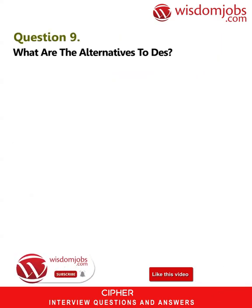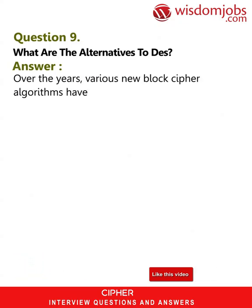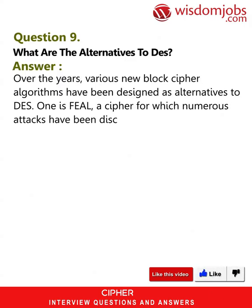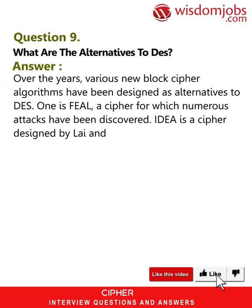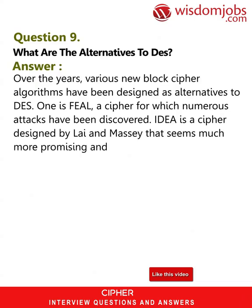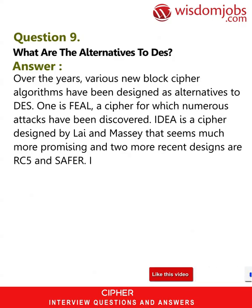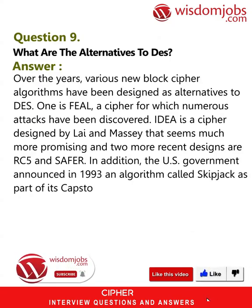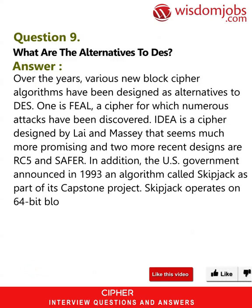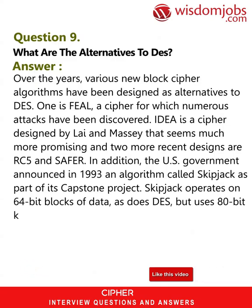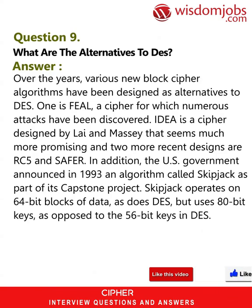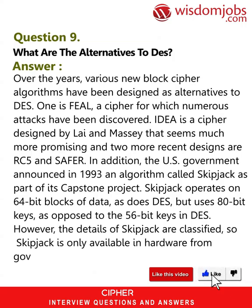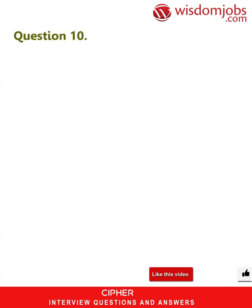Question 9: What are the alternatives to DES? Answer: Over the years, various new block cipher algorithms have been designed as alternatives to DES. One is FEAL, a cipher for which numerous attacks have been discovered. IDEA is a cipher designed by Lai and Massey that seems much more promising, and two more recent designs are RC5 and SAFER. In addition, the U.S. government announced in 1993 an algorithm called Skipjack as part of its Capstone project. Skipjack operates on 64-bit blocks of data but uses 80-bit keys as opposed to the 56-bit keys in DES. However, the details of Skipjack are classified, so Skipjack is only available in hardware from government-authorized manufacturers.